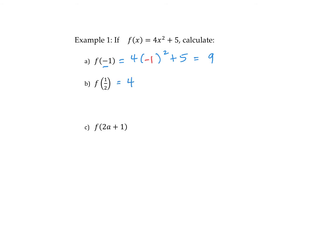f of 1 half, same thing. I'm going to replace the x with 1 half, so I'm going to put 1 half in the bracket. So 1 half squared is 1 quarter. 4 times a quarter is 1 plus 5 is 6.